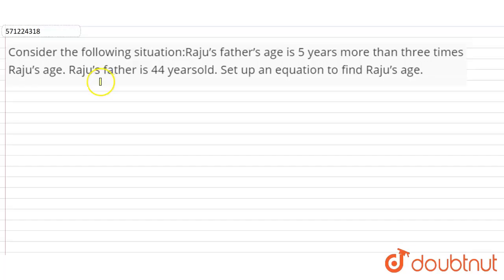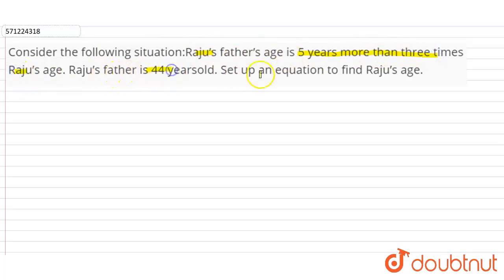Hi students, the question is: consider the following situation. Raju's father's age is 5 years more than 3 times the age of Raju, and Raju's father's age is 44 years. Set up an equation to find Raju's age.